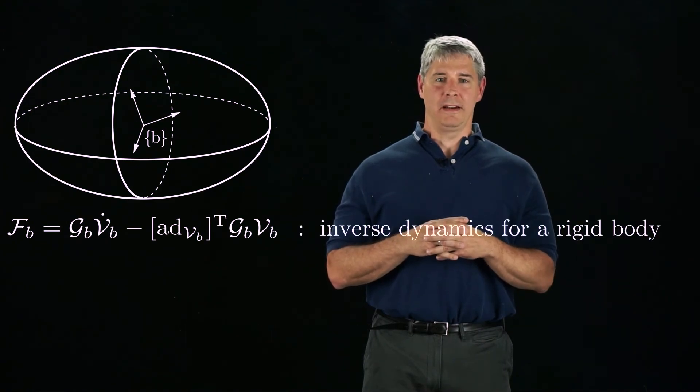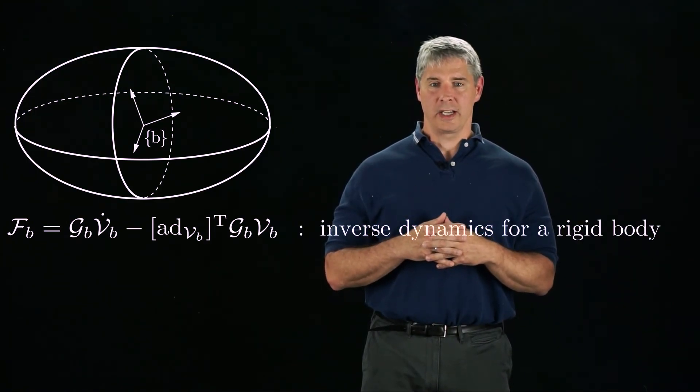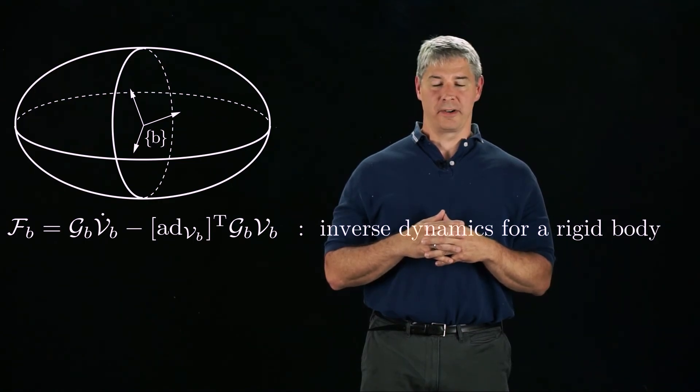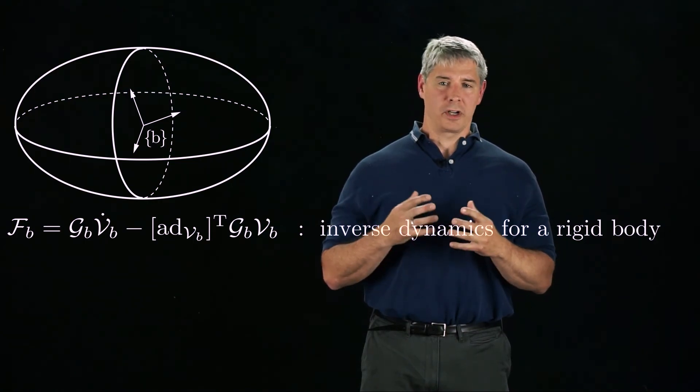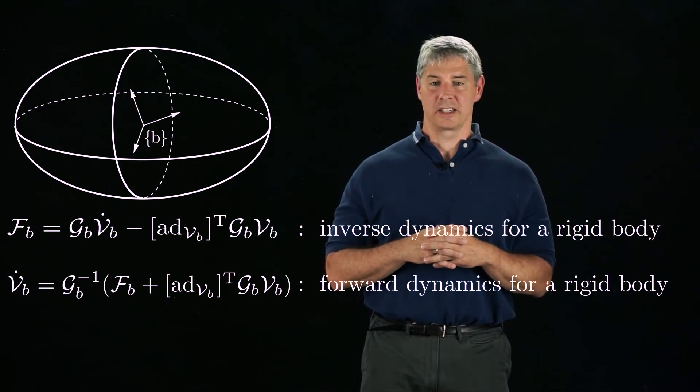To wrap up, we have derived the inverse dynamics for a rigid body. Given the twist and acceleration, we can calculate the wrench needed to generate this motion. We can also write the forward dynamics, which takes the current twist and the applied wrench and calculates the acceleration.